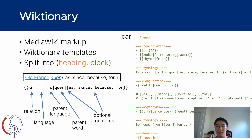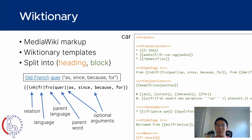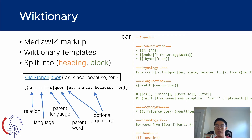In this box, we see the HTML rendered version of this template below, which basically says the French word "car" is inherited from this Old French word "care", which means "as", "since", "because", or "for". Yawapa will extract this inheritance relation, as well as the glosses for this word.